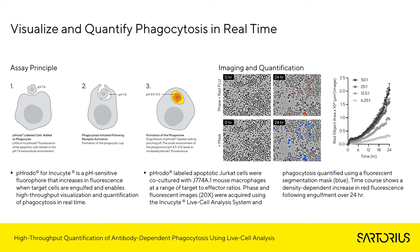Using the IncuCyte Live Cell Analysis System, this increase in fluorescence can be automatically quantified over time with integrated software to segment areas of high intensity. The observed phagocytic signals can be confirmed using IncuCyte HD phase contrast images, allowing direct visualization of cell engulfment in real time. For example, Frodo-labeled apoptotic Jurkat cells were co-cultured with J774A.1 mouse macrophages at a range of target-to-effector ratios. Phase and fluorescent images at 20x were acquired, and phagocytosis was quantified using the fluorescence segmentation mask shown in blue. The time course shows a density-dependent increase in fluorescence following engulfment over 24 hours.